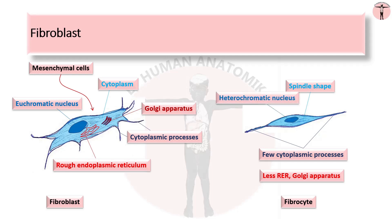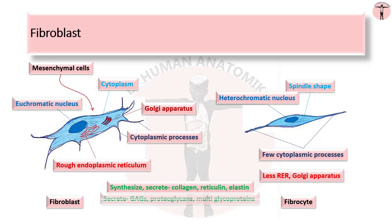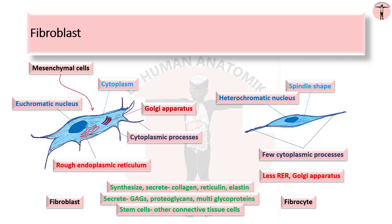The old fibroblast is usually spindle-shaped with fewer processes and much less rough endoplasmic reticulum and Golgi apparatus, and contains a darker more heterochromatic nucleus. The function of fibroblasts is to synthesize and secrete collagen, reticulin and elastin which form large fibers. It also secretes the glycosaminoglycans, proteoglycans and multi-glycoproteins. It not only produces but also maintains the extracellular matrix, and acts as stem cells differentiating into other connective tissue cells.